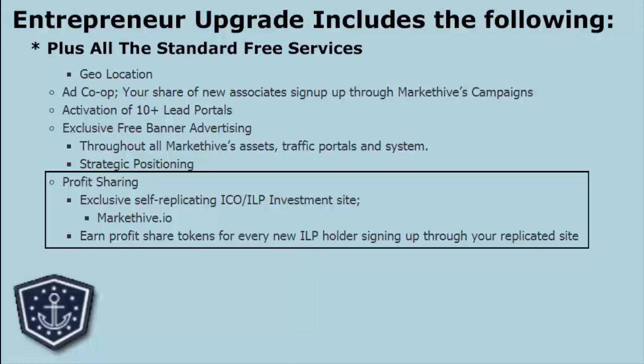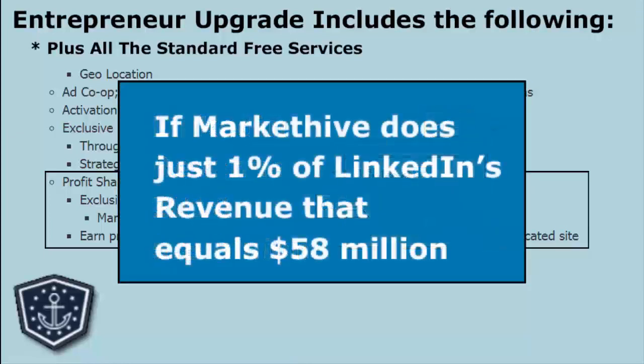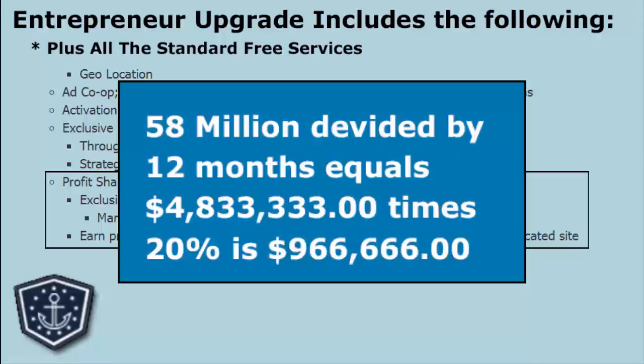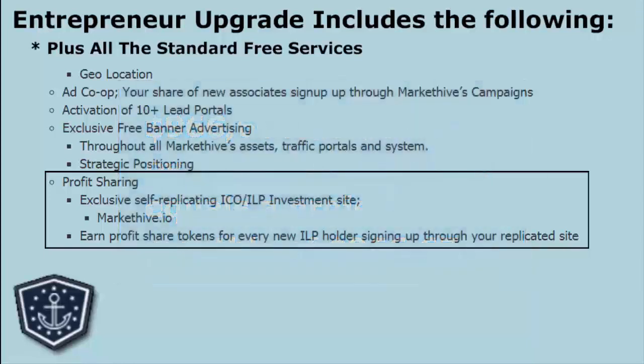Your ILP — one-tenth of an ILP — is one-tenth of a share. We will have a maximum of 1,000 shares of 20% of the revenue of the company. If we should do just 1% of what LinkedIn does — they do one billion a quarter — you take one billion times 1%, that's ten million; divide that by three, that's per month; multiply that times 20%; then divide by 1,000. You're looking at $600 to $700 a month being paid out on each ILP.